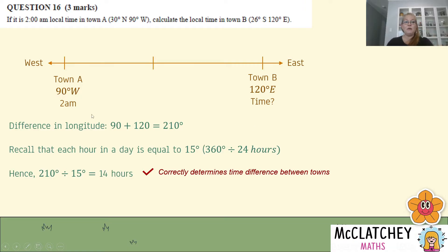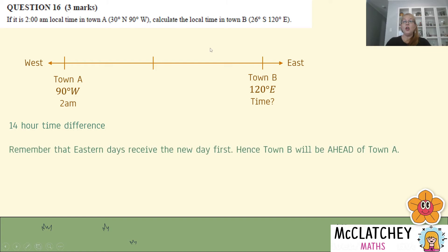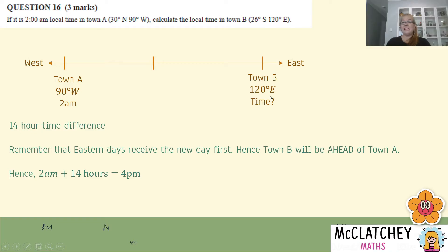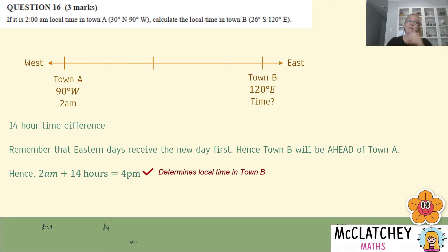Now we've been given 2 a.m. in Town A and a 14-hour difference. We need to work out whether Town B is before or after 2 a.m. We know that eastern locations get the new day first — countries like New Zealand, Australia, Pacific Islands, Japan are all east of zero degrees and experience a new day earlier. So Town B, being east, is ahead of Town A by 14 hours. Adding 14 hours to 2 a.m.: 2 a.m. plus 12 hours is 2 p.m., plus 2 more is 4 p.m. That gives us our third mark — local time in Town B is 4 p.m.